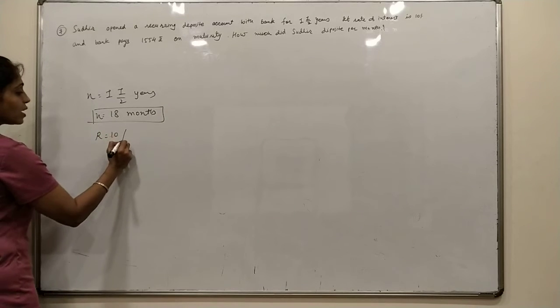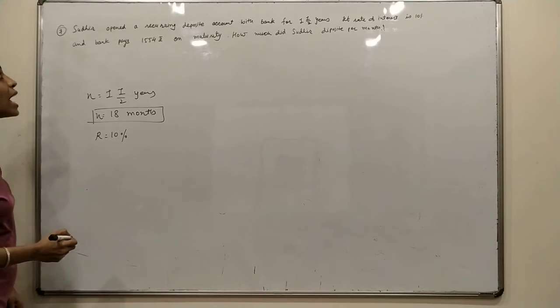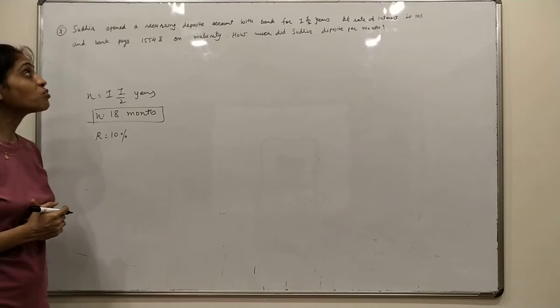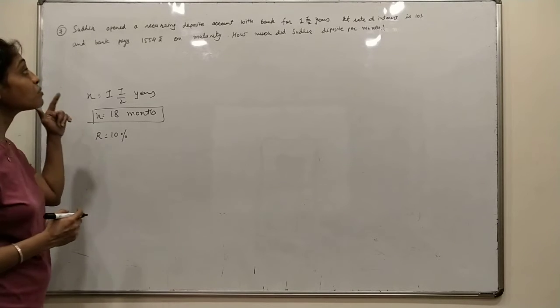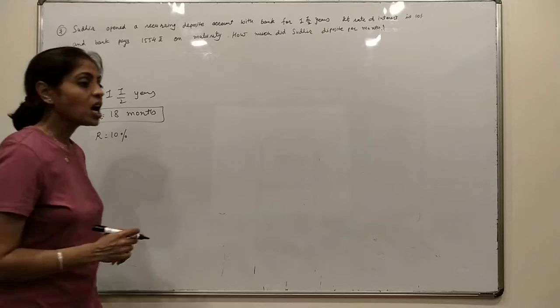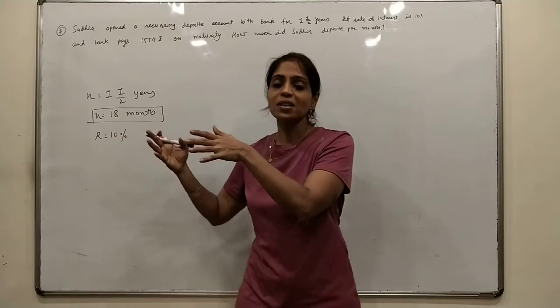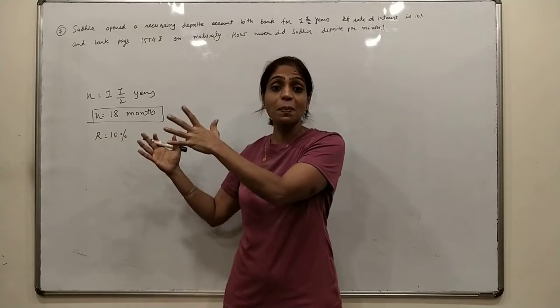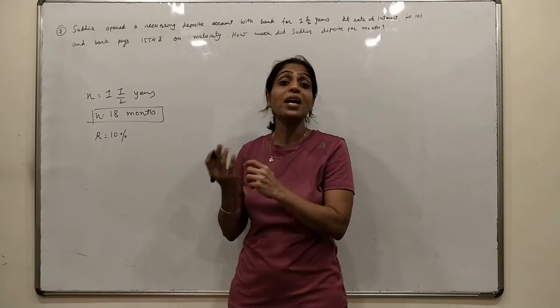The bank pays 1554 at maturity. So if we have a bank, we have to collect the money, meaning we have to collect the interest.